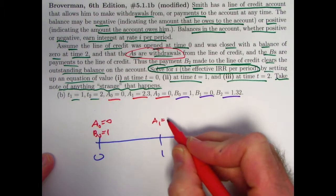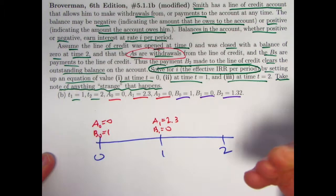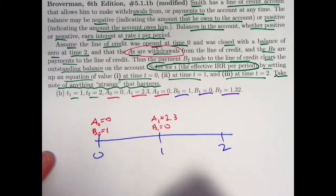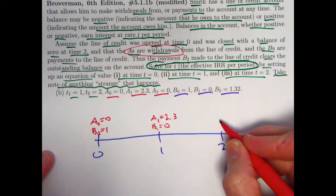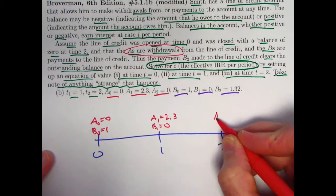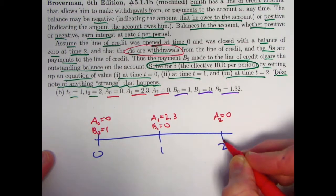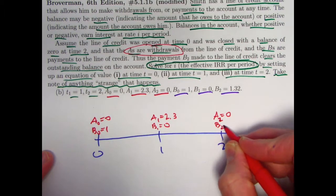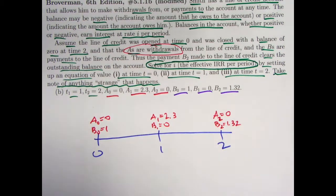And B zero is one. So the net effect there is that Smith is putting one into the account. At time one, A one is 2.3, and B one is zero. So Smith is withdrawing 2.3 from the account. But that makes the balance negative, since that's a lot bigger than that. Then at time two, A two is zero. And by the way, time two is the same as time T two. And B two is 1.32. So Smith is paying 1.32 to bring the balance in the account back to zero.